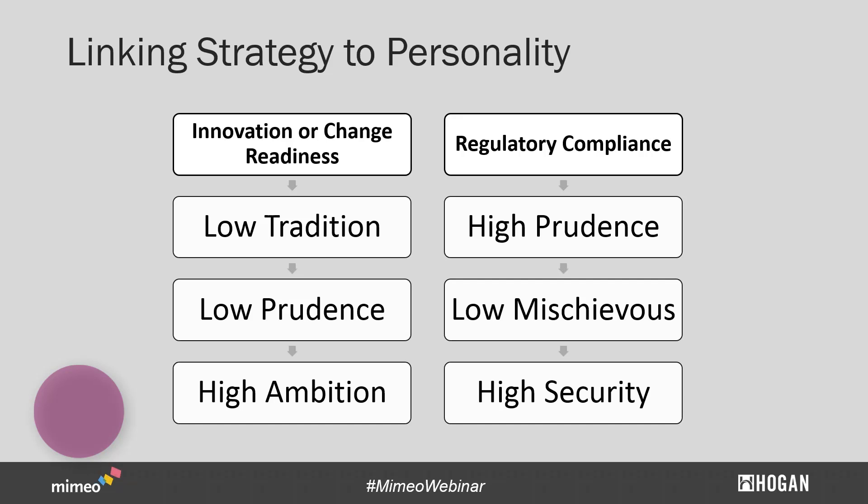Personality psychology really concerns what we call the nature of human nature. Here at Hogan, everything that we study and everything that we measure relates back to tangible business outcomes — we are really not interested in measuring anything else. We can show through thousands of performance studies that tangible business outcomes are linked directly back to the personality of the leaders making the decisions. So we link strategies and outcomes to desired personality characteristics for organizations all the time.